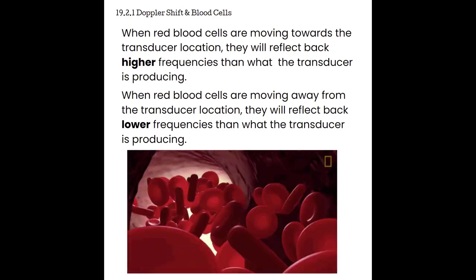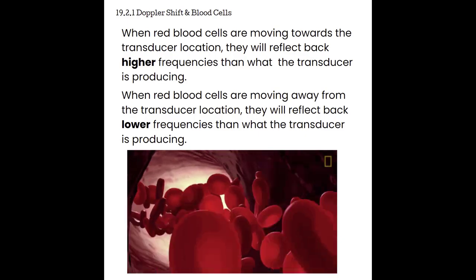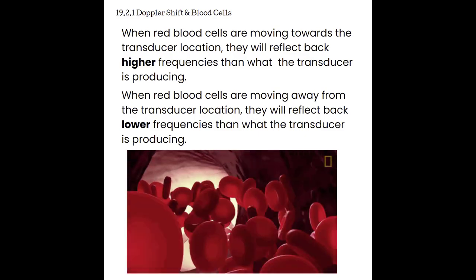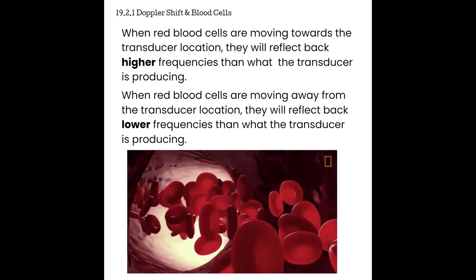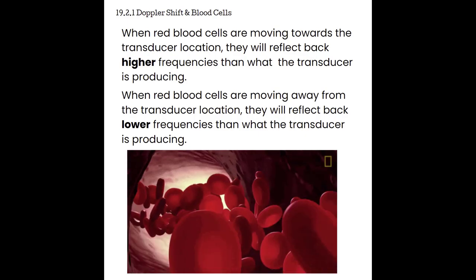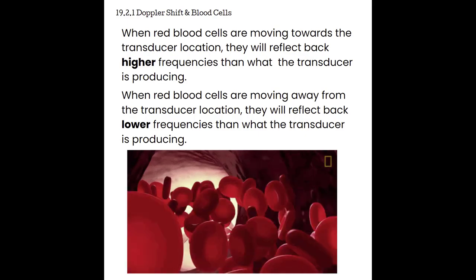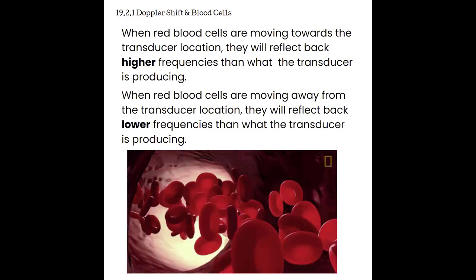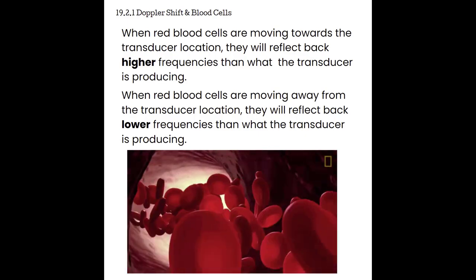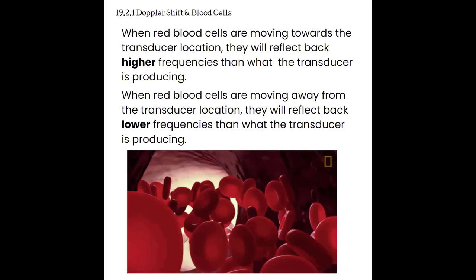A Doppler shift can be detected by the machine when it evaluates the frequency of echoes returning from moving reflectors — which are our red blood cells. When red blood cells move towards the transducer, they reflect back higher frequencies than what the transducer produces. When they move away from the transducer, they reflect back lower frequencies. Red blood cells moving towards the transducer produce a positive shift; red blood cells moving away produce a negative Doppler shift.